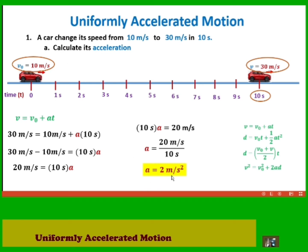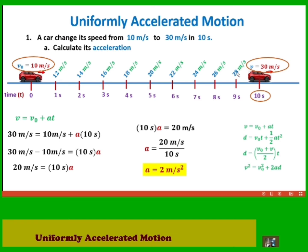The acceleration of the car is 2 meters per second squared, meaning in every second its speed increases by 2 meters per second. After one second, 10 meters per second becomes 12 meters per second. After another second, 12 becomes 14, then 16, 18, 20, 22, 24, 26, 28, and finally 30 meters per second — which is the final speed after 10 seconds.